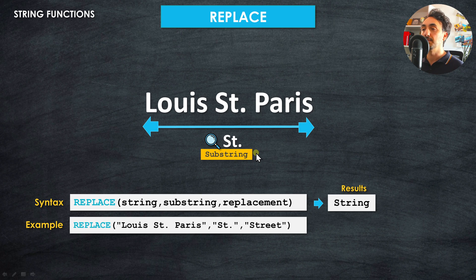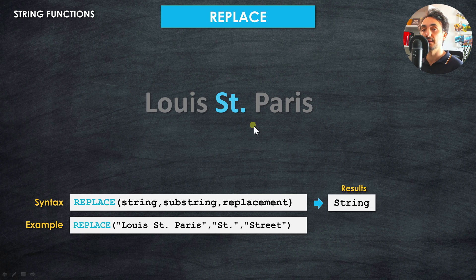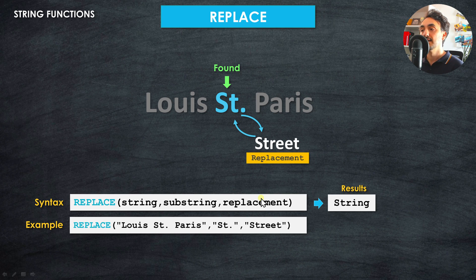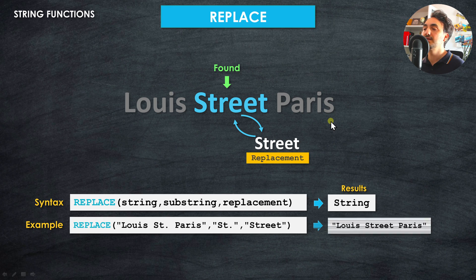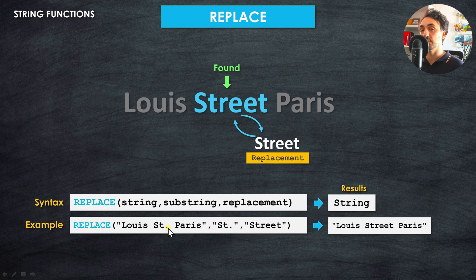Tableau first searches the whole text to find the substring. In this example it finds 'St.' in the middle of the address, then replaces it with the complete word 'street'. At the end we get 'Louis Street Paris' — the old abbreviation is replaced with the full word.